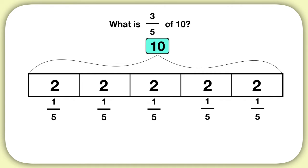Now remember, I'm looking for three-fifths of ten, so I'll need to count up not just one piece, but three of these pieces — three-fifths of the total. And we can see two plus two plus two would give me a total of six. Three-fifths of ten is six.